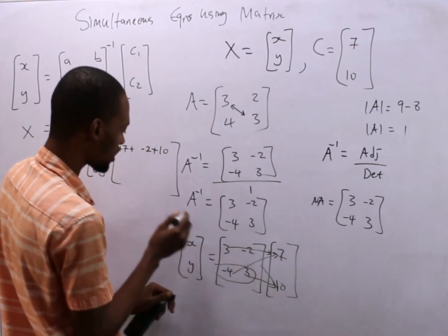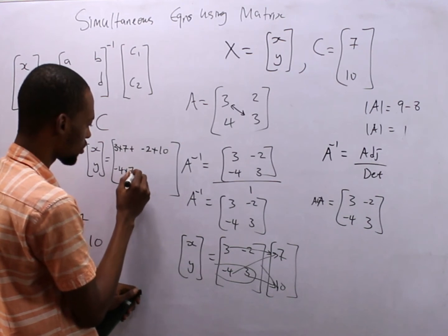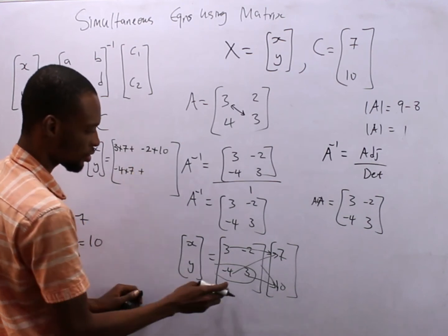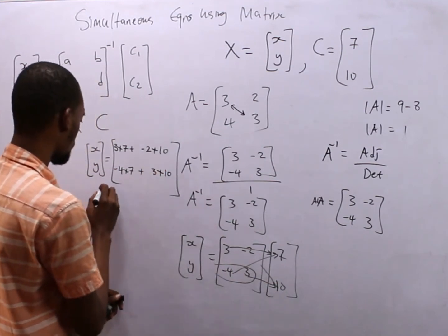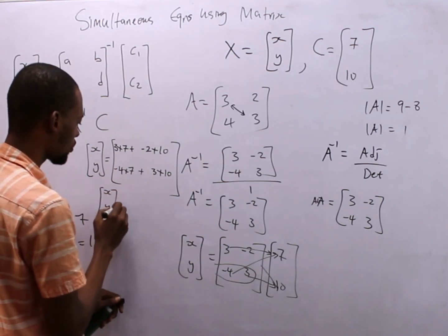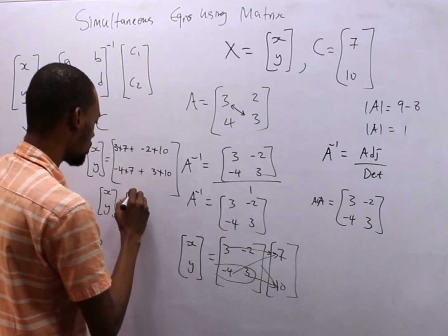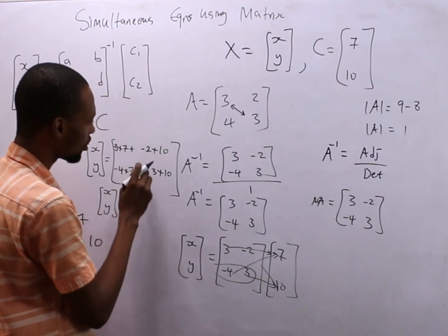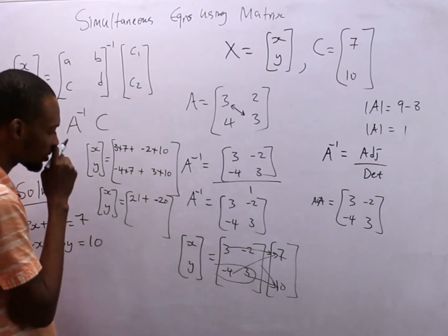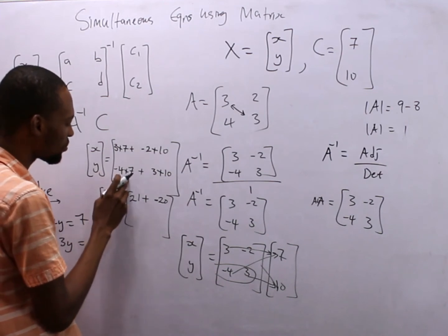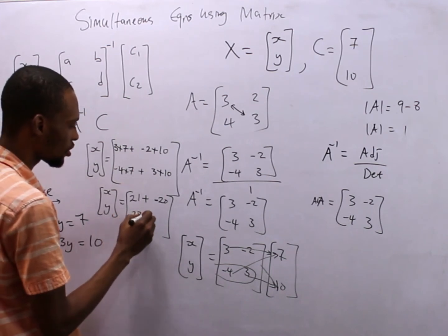So minus 4 times 7 plus 3 times 10. So this equals 3 times 7 is 21, so here is 21 plus minus 2 times 10, that's minus 20.